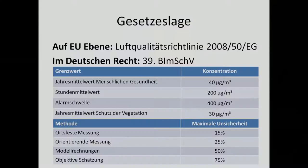The legal situation is at the level of the European Union in the air quality directive 2008/50/EG. There are minimum requirements for the EU, and these were converted into German law with the 39th emission regulation. In this regulation there are limit values based on WHO recommendations. There is a mean value for human health of 40 micrograms per cubic meter. The hourly mean value can only be 200 micrograms per cubic meter, and if exceeded for a longer time there will be an alarm. The alarm level is 400 micrograms per cubic meter, which immediately raises an alarm.